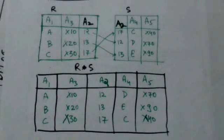In relations R and S, attribute A2 is common. So the tuples of resulting relation is formed by combining those tuples of relations R and S which have same value for attribute A2, and then removing the duplicate attributes from the tuple.